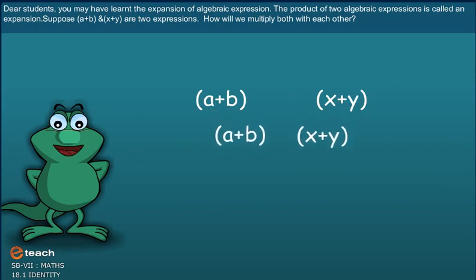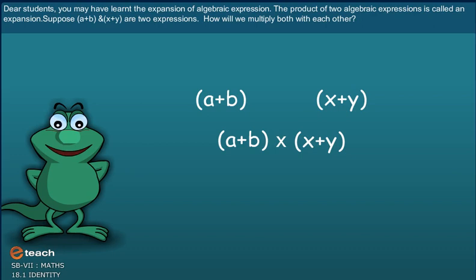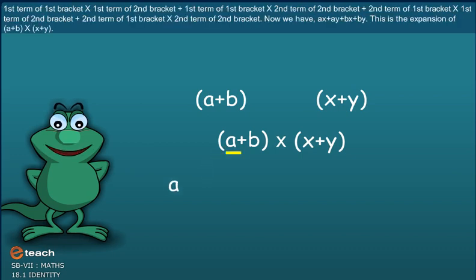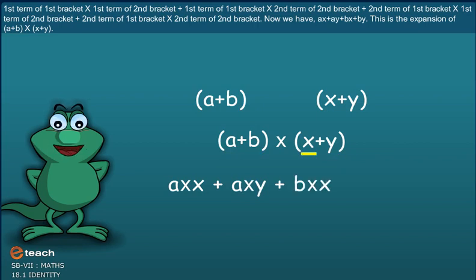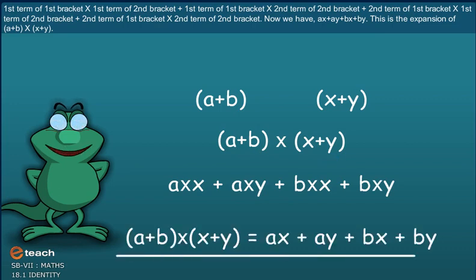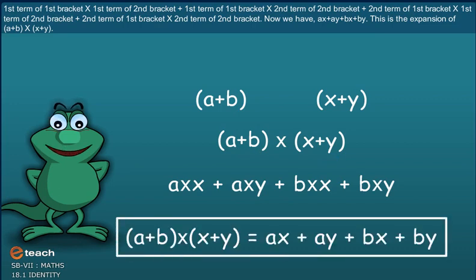Suppose A plus B and X plus Y are two expressions. How will you multiply both with each other? First term of the first bracket into first term of the second bracket, plus first term of the first bracket into second term of the second bracket, plus second term of the first bracket into first term of the second bracket. We get AX plus AY plus BX plus BY. This is the expansion of A plus B into X plus Y.